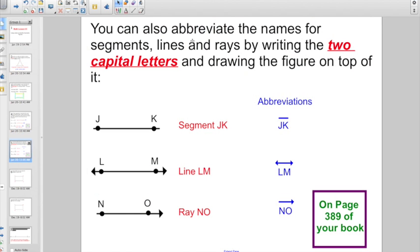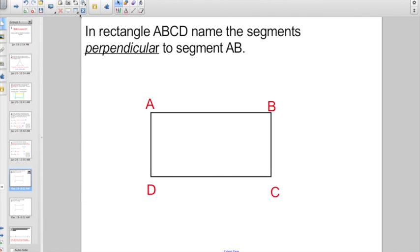Also, you can abbreviate the names for segments, lines, and rays by writing the two capital letters and drawing the figure on top of it. If you wanted to call this segment JK, you could abbreviate by writing capital J, capital K, and putting a little segment on top. If this was line LM, you could write capital L, capital M, and put a line on top. Or here, if you wanted to call this ray NO, capital N, capital O, and draw a little picture of a ray on top. This is also all on page 389 of your book.